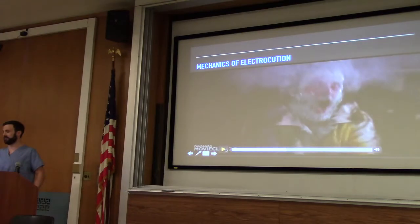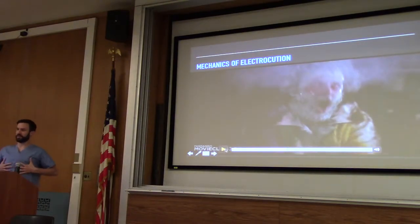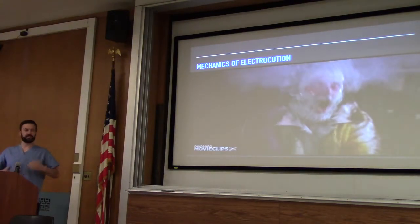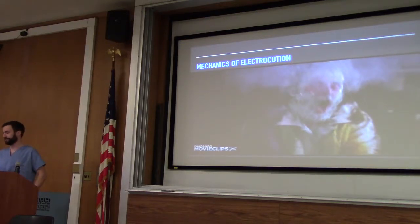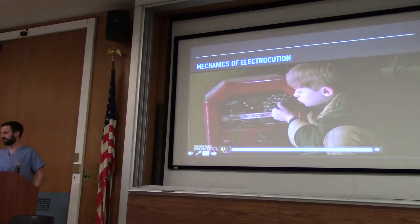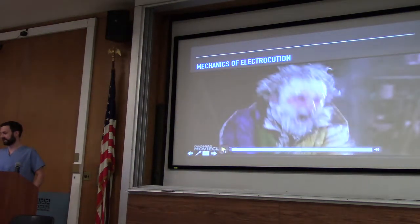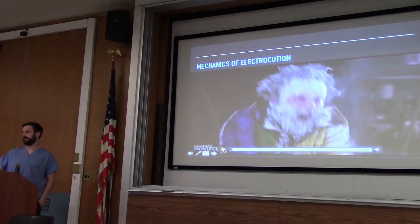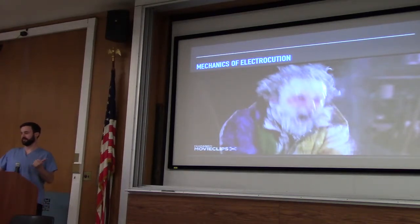Maybe he's having a little bit of respiratory arrest — your chest wall muscles will contract from the electricity and he'll stop breathing. Then if he gets switched over to high voltage, let's pretend that went above a thousand volts. Now, instead of V-fib, it's probably asystole.